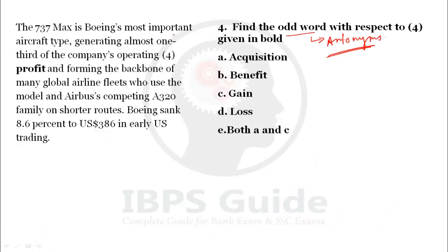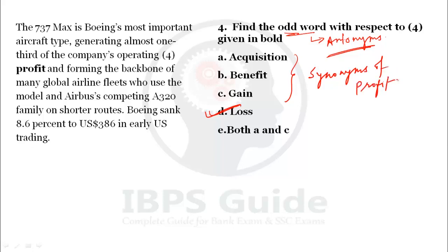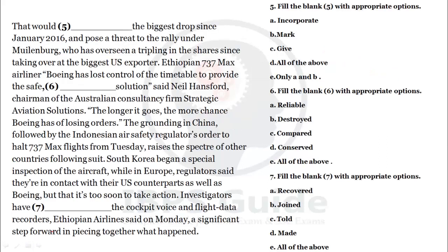Question 4: 'The 737 MAX is Boeing's most important aircraft type, generating almost one-third of the company's operating [profit].' We need the antonym — odd word — of 'profit'. Options include acquisition, benefit, gain, and loss. Acquisition, benefit, and gain are all synonyms of profit. Therefore, the antonym and correct answer is 'loss'.